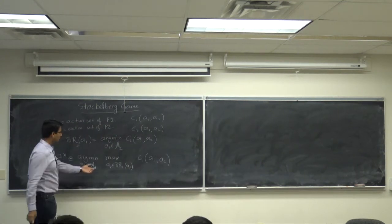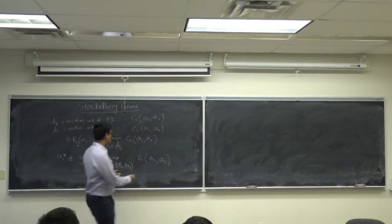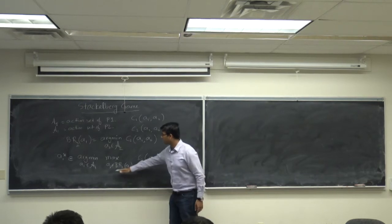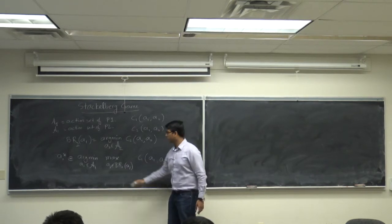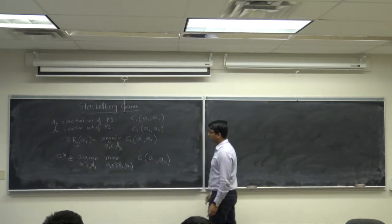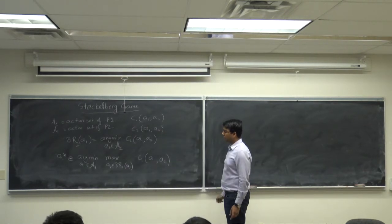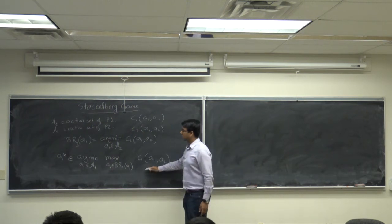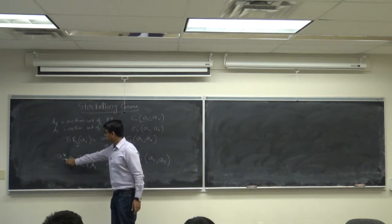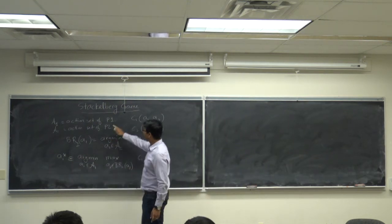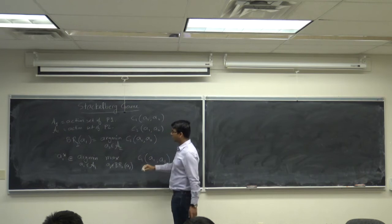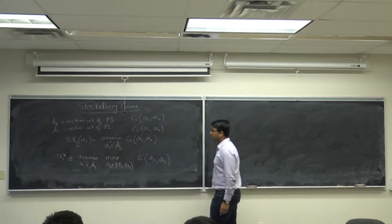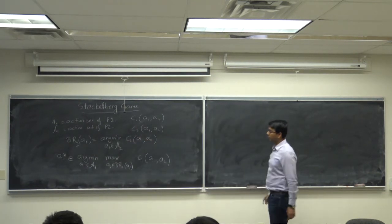Player one is trying to secure the maximum possible cost assuming player two will behave optimally, given player one's choice of A1. A1* is the Stackelberg equilibrium strategy for player one, and BR2(A1*) is the Stackelberg equilibrium for player two.